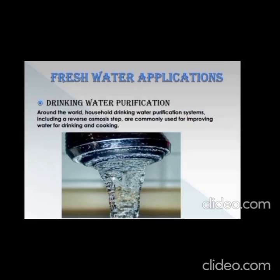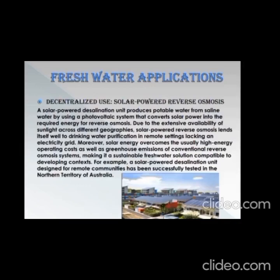Next is the application of fresh water. First is drinking water purification: around the world, household drinking water purification systems, including a reverse osmosis tap, are commonly used for improving water for drinking and cooking. Second is decentralized use — solar-powered reverse osmosis. A solar-powered desalination unit produces potable water from saline water by using a photovoltaic system that converts solar power into the required energy for reverse osmosis.